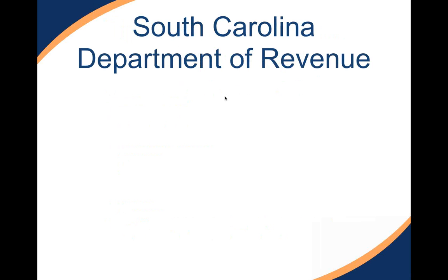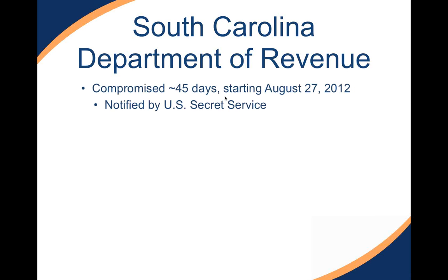We're going to talk about an interesting occurrence at the South Carolina Department of Revenue back in August of last year, where they were compromised for about 45 days. They were notified by the U.S. Secret Service on October 10th that they were compromised — they didn't find out themselves. Two days later, they used Mandiant to figure out how big the compromise was and what was affected.